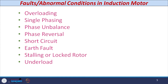The faults and abnormal conditions in induction motors can be listed as: first, overloading; second, single phasing — where one phase of the three-phase induction motor is not available; third, phase unbalance — where instead of RYB, some other phase sequence like RBY is given; phase reversal; short circuit — if any fault occurs in the winding, a large magnitude of current flows; and earth fault — that is between the winding and the core.